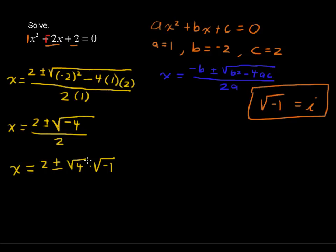So instead of writing the square root of negative 1, we will write i. This is all over 2. Now, x equals 2 plus or minus, the square root of 4 is just 2, so I'll write 2. The square root of negative 1 is i, as we have over here. This is all over 2.